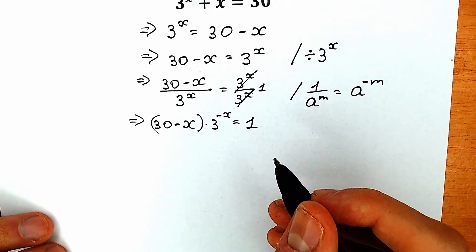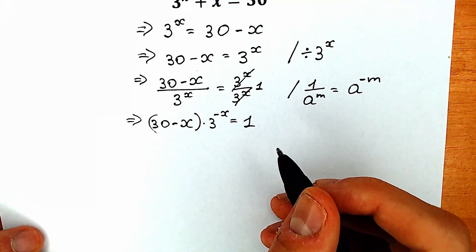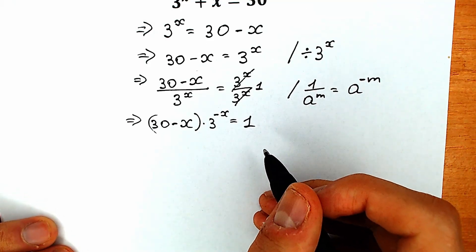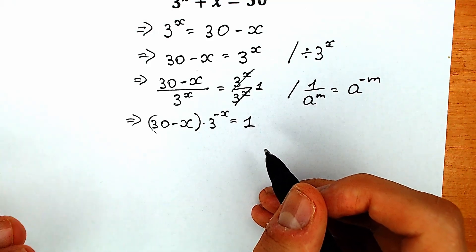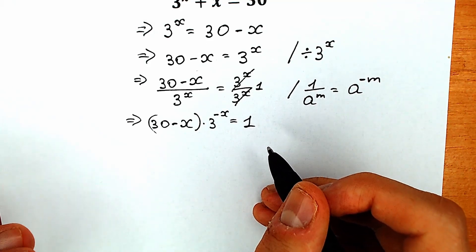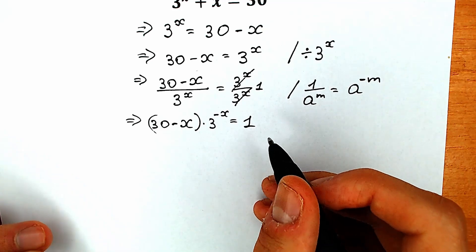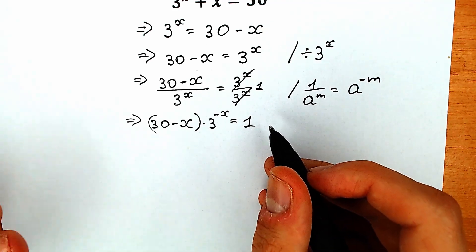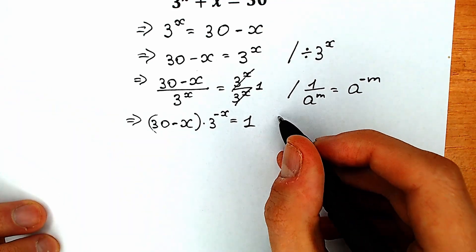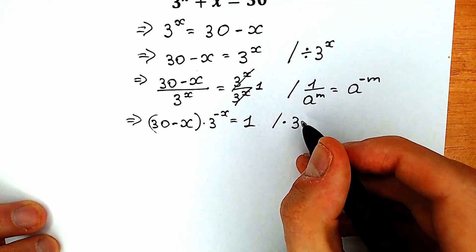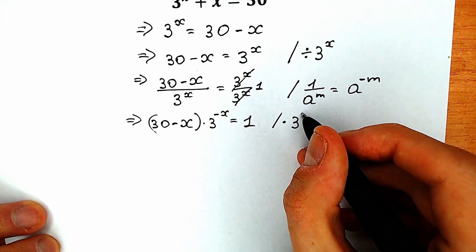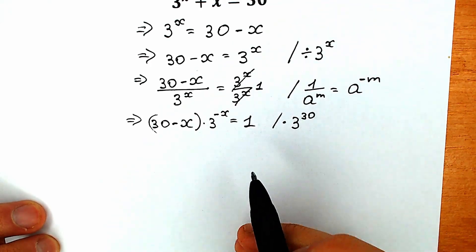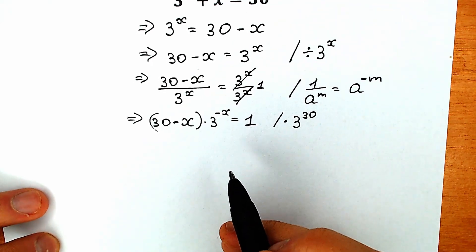Right now we need to remember the Lambert W function. But first of all, let's multiply both sides by 3 to the power 30. Don't ask me why — in a few seconds you will understand. We're going to multiply both sides by 3 to the power 30.